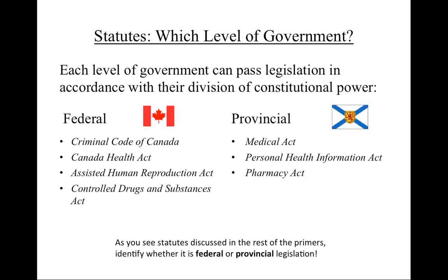Each level of government — federal and provincial — can pass laws within their spheres of power set out in the division of powers we previously discussed. This is why you see both federal and provincial statutes. For example, the federal government has created the Criminal Code under its constitutional power over criminal law in Section 91-27 of the Constitution Act 1867. Here you can see a few samples of statutes which might affect the medical profession passed by each level of government. The list of statutes from all levels is very, very long.